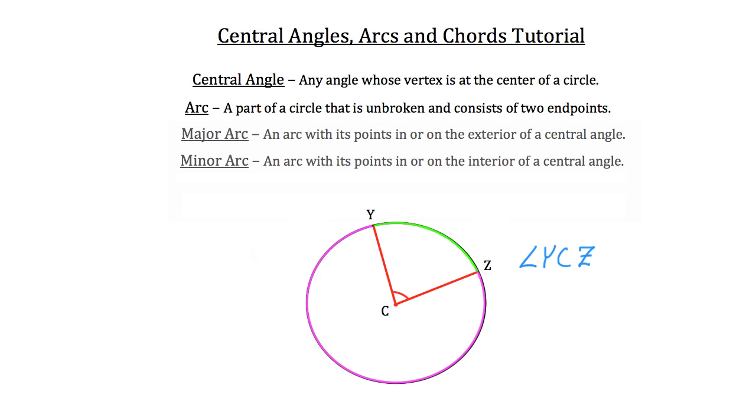The larger arc in purple is called a major arc. That's an arc with its points in or on the exterior of a central angle.